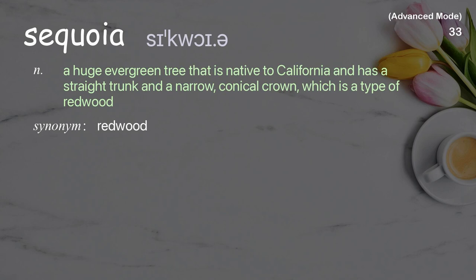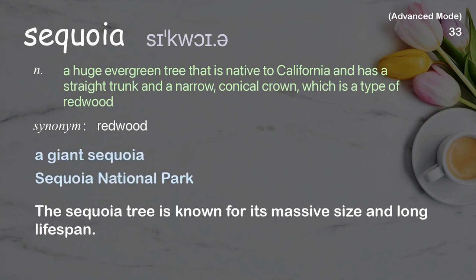Sequoia: A huge evergreen tree native to California with a straight trunk and a narrow conical crown, which is a type of redwood. Examples: a giant sequoia, Sequoia National Park, the sequoia tree is known for its massive size and long lifespan.